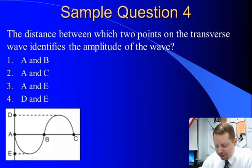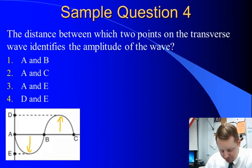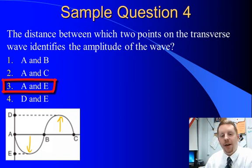Question 4. The distance between which two points on the transverse wave identifies the amplitude of the wave? Well, if you'll recall, the amplitude of the wave is the distance from the baseline to a crest or the baseline to a trough. So our choices between A and B? No, that doesn't work. Those are on the baseline. Between A and C? Those are also on the baseline. A and E? Ah, there's the distance between a baseline and a trough. So that should work. There's our amplitude. In choice 4, D and E? Well, that's from a crest to a trough, so that would be 2 times the amplitude. That can't be the answer. The correct answer must be 3, A and E.